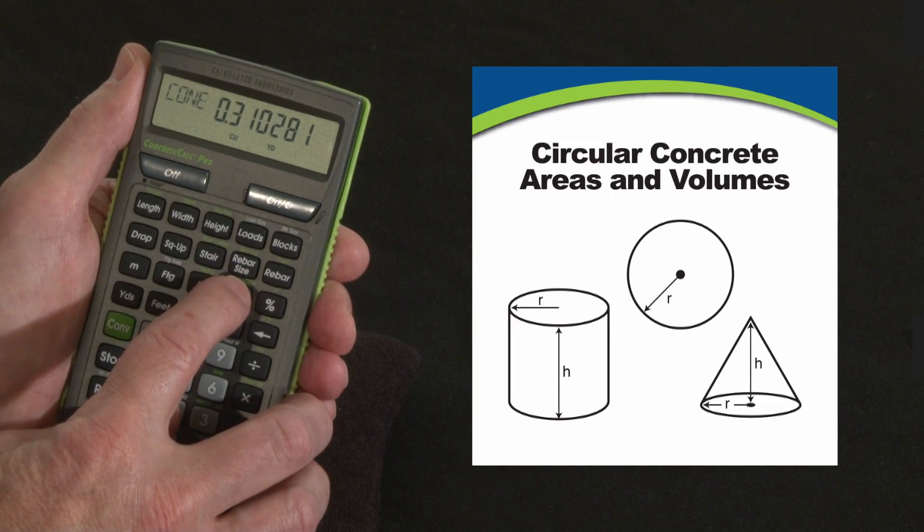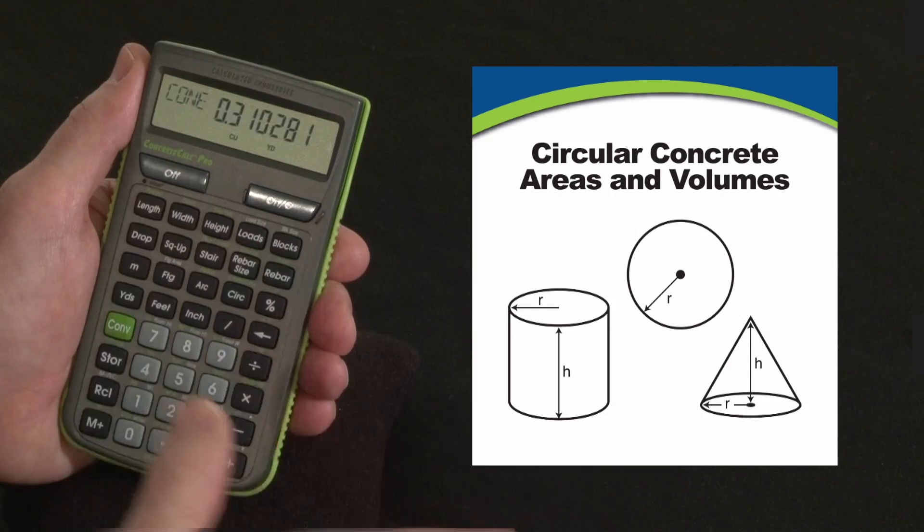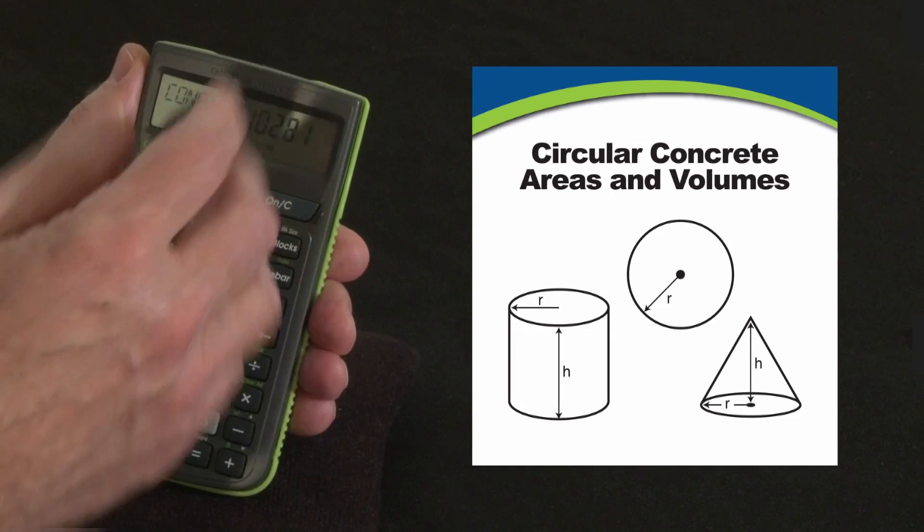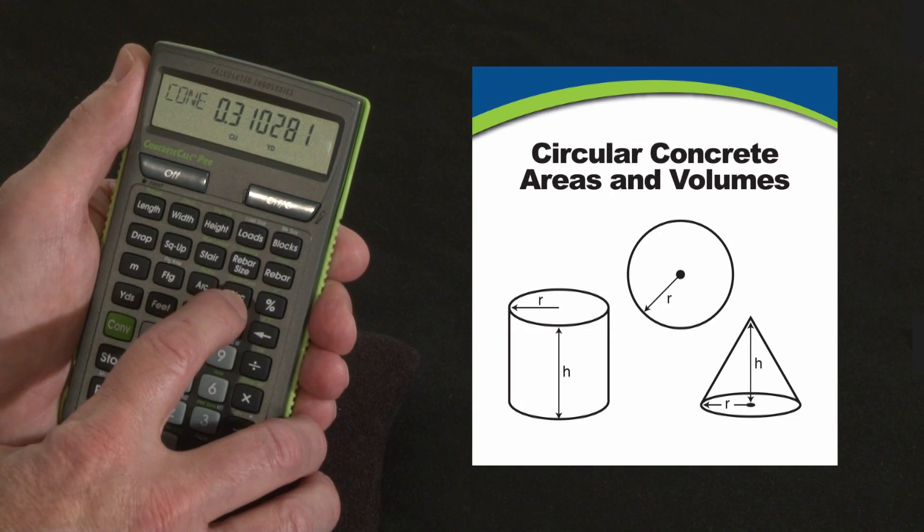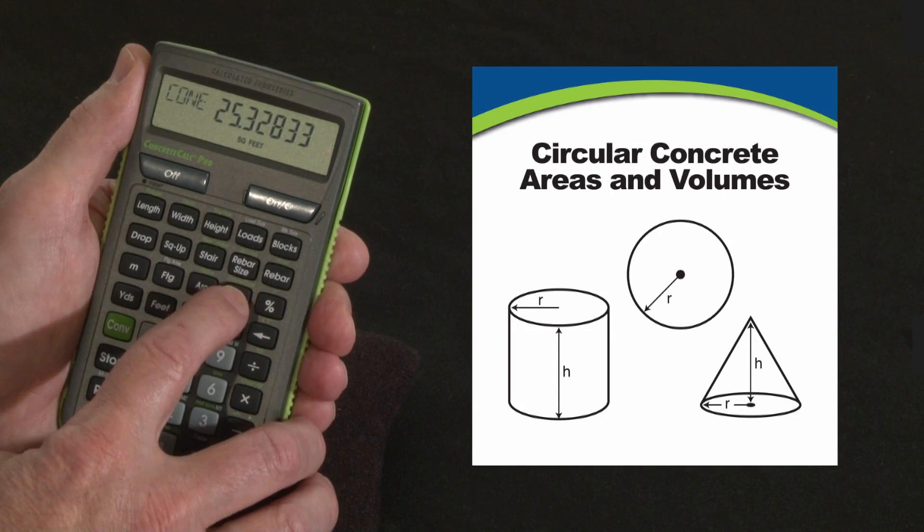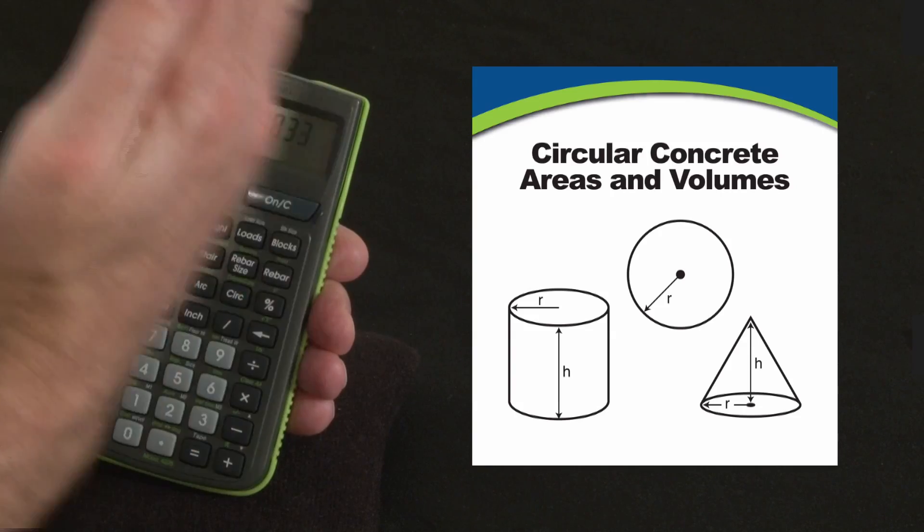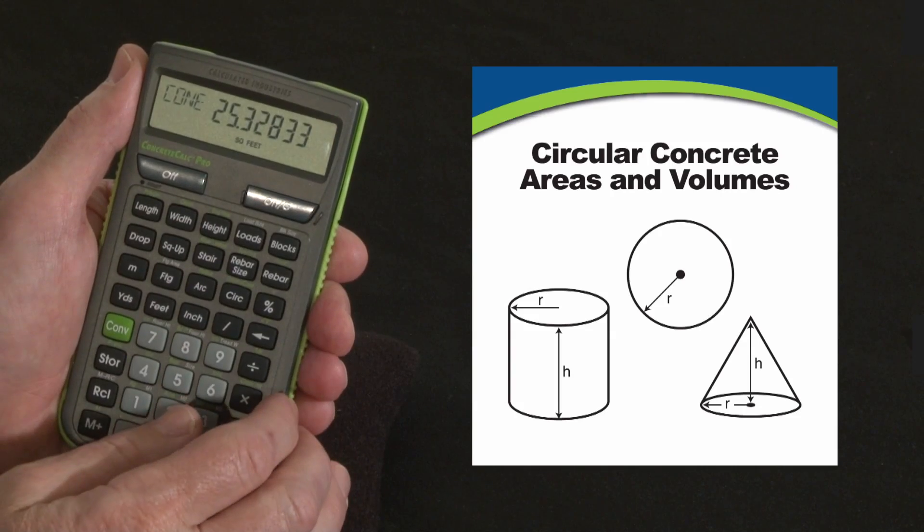Let me press it again. This gives me the cone volume. So if you had a pile of material in a cone shape with that diameter and that height, that would be about a third of a yard. And press it one more time and it gives me the surface area around the cone, the surface of the cone there.